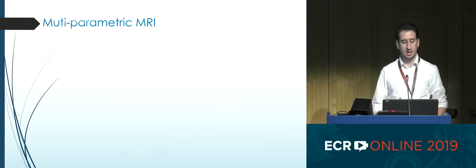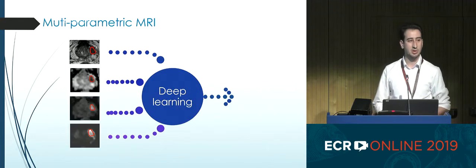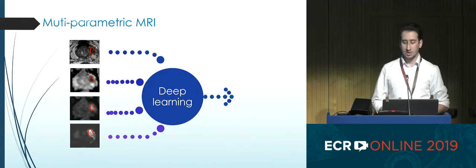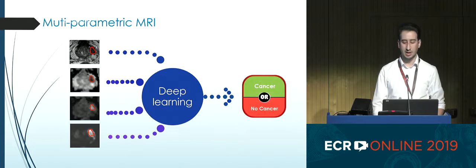So for multi-parametric MRI, in the abstract scheme of our approach, we have multi-sequences of MR, then we have our deep learning approach, and we are aiming at the prediction of cancer or no cancer.